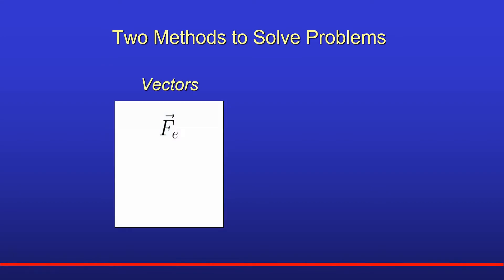In the vector method we begin with the electric force. Remember, you must have at least two objects in order to have a force — each object exerts a force on the other. Every single charge can have an electric field; we say that every charge is surrounded by an electric field. We answer the question of how one charge exerts a force on the other by saying each charge is surrounded by an electric field. When another charge enters that electric field it experiences the force given by the relationship F = qE.